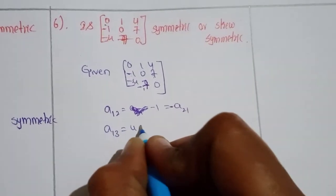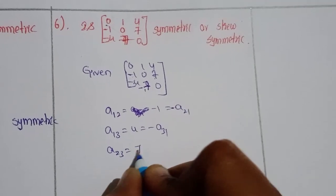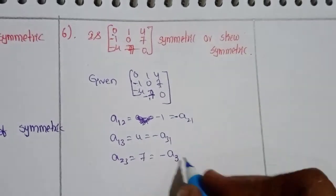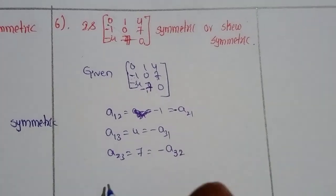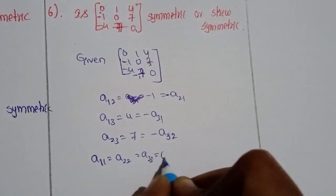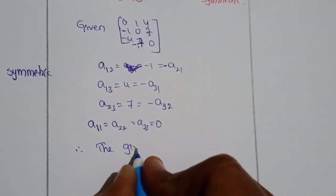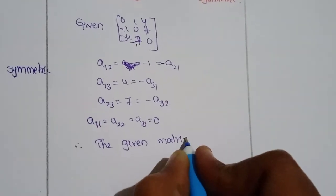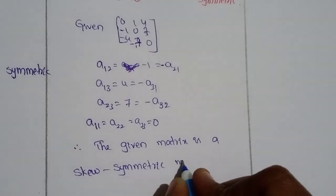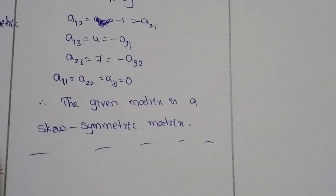Continuing verification: A(1,3) = 4 = -A(3,1); A(2,3) = 7 = -A(3,2). The diagonal elements A(1,1), A(2,2), A(3,3) are all equal to 0. Since A^T = -A and all diagonal elements are zero, the given matrix is a skew symmetric matrix. Thank you for watching.